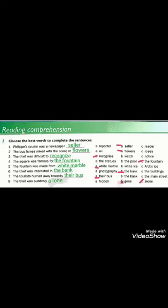Let's start with question number one in our student's book page 20. Choose the best words to complete the sentences. Number one, Philip's cousin was a newspaper. A, reporter. B, seller, or C, reader. Philip's cousin was a newspaper seller. Ibn Am Philip كان بائع صحف.